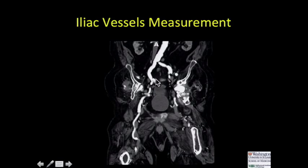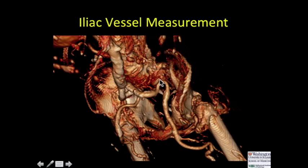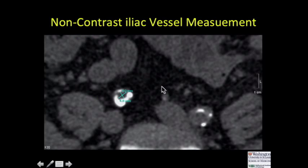If you have a very tortuous configuration of the iliac vessels, you may not be able to generate a curved MPR — because the vessel is curling back on itself. A 3D representation in such a patient may show the external iliac doing essentially a U-turn — coming down, doing a 90-degree turn, then another 90-degree turn back upon itself — which with calcium would not be ideal for a femoral vascular approach. Similarly on non-contrast studies, measuring from calcium to calcium, a narrow point of about 5 millimeters makes it unfavorable for a right femoral vascular approach.